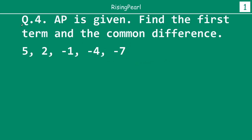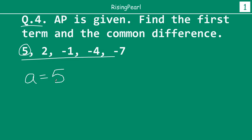This is question number 4 because we actually looked at three questions in our Webisode 3, the last Webisode which was part 1. So we are going to have a running total on the question count. An AP is given — find the first term and the common difference. So this is the AP which is given to us. Clearly, this is not a very big challenge to find the first term. The first term is obviously 5, so A is equal to 5.